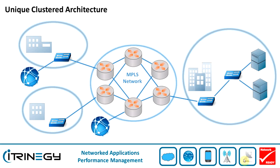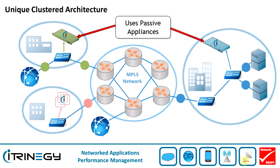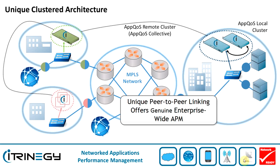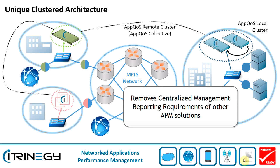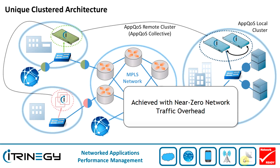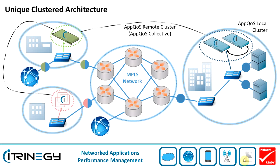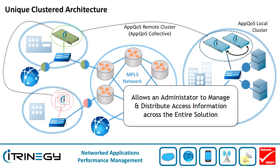APCOS are passive appliances that are simple and quick to deploy. Uniquely, these appliances may be linked together on a peer-to-peer basis to form a truly enterprise-wide single APM solution. This architecture negates the central management reporting requirement issues of other vendors. And yet, APCOS creates almost no traffic overhead on the network, and allows an administrator to manage and distribute access to this information across the entire solution.